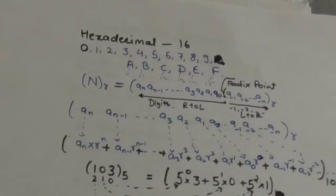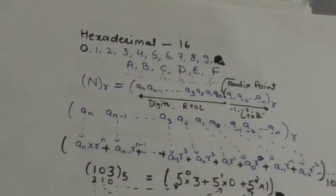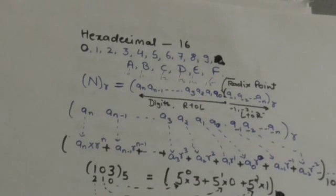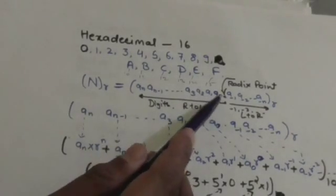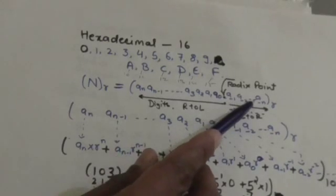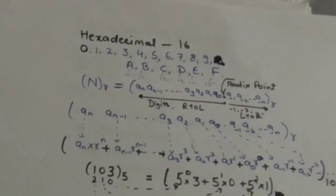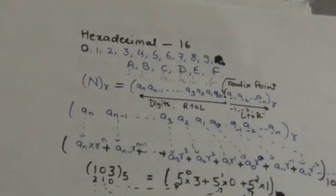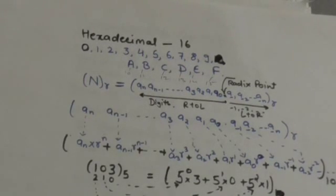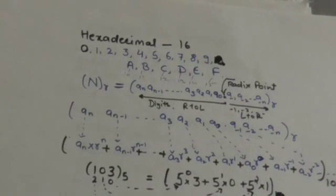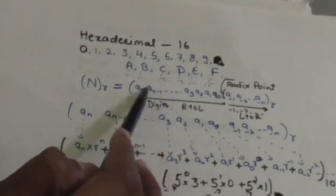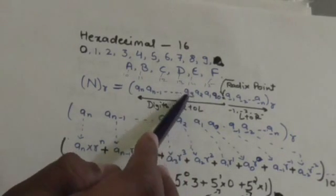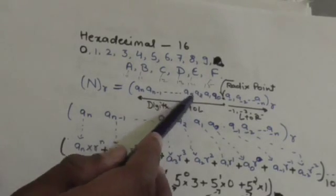Now, suppose there is a number N whose base or radix is r, and we have to convert it into a decimal number — that means converting a number N of base r into a number of base 10. The digits of number N are a0, a1, a2, a3, a(-1), a(-2), a(-n), and this point is the radix point. In the decimal number system, this radix point is called the decimal point. These subscripts represent the position of digits in number N — for example, in digit a3, the 3 represents the position of that digit.